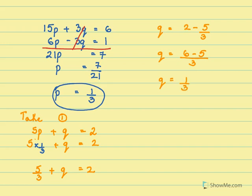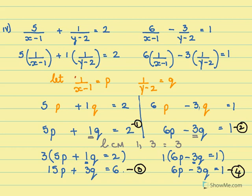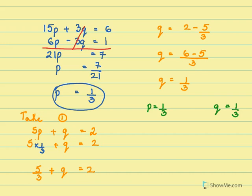Now we found the values of both. We found p as 1 by 3 and we found q as also 1 by 3. Now if you remember we have taken p as 1 over x minus 1 and q as 1 over y minus 2. So now for p I am going to write 1 over x minus 1 equal to 1 by 3.